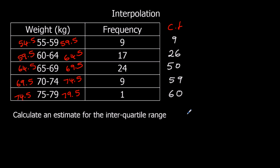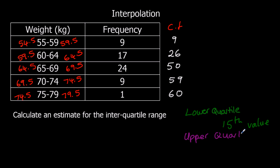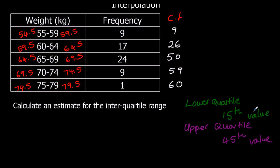We need to work out the quartiles. For the lower quartile, 60 divided by 4 is 15, so it's the 15th value. For the upper quartile, divide by 4 giving 15, then times by 3, so the 45th value. For the lower quartile, we're looking for the 15th value. We've got 9 then 26, so it must be in the second group. We were at 9 and need to get to 15, so we're going 6 into the second group.